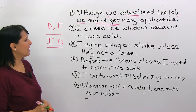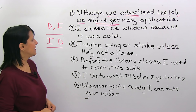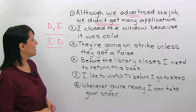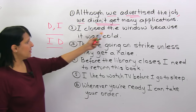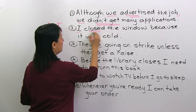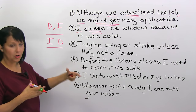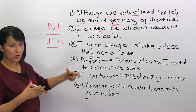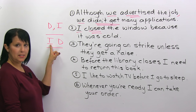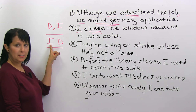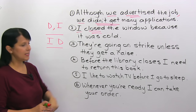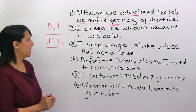Number two: 'I closed the window because it was cold.' Does that sentence need a comma? 'I closed the window' is a complete sentence — an independent clause. 'Because it was cold' is the dependent clause, but it comes after. When you have an independent clause followed by a dependent clause, you need no comma. So this sentence is absolutely fine as it is: 'I closed the window because it was cold.' No comma necessary.